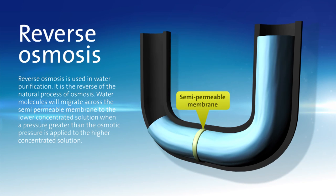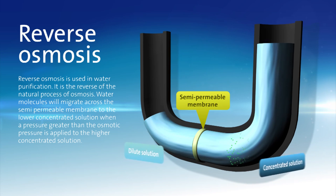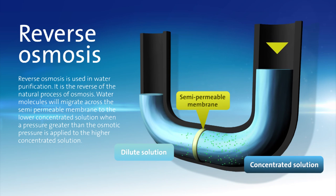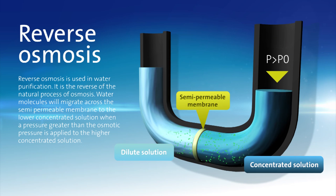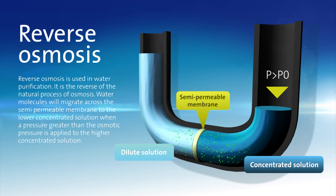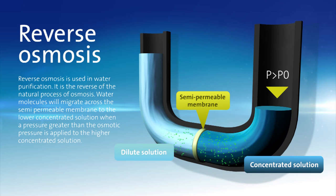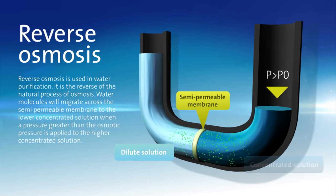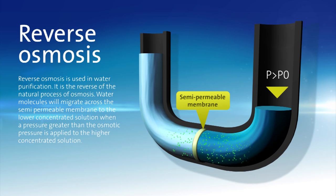Reverse osmosis is used in water purification. It is the reverse of the natural process of osmosis. Water molecules will migrate across the semi-permeable membrane to the lower concentrated solution when a pressure greater than the osmotic pressure is applied to the higher concentrated solution.